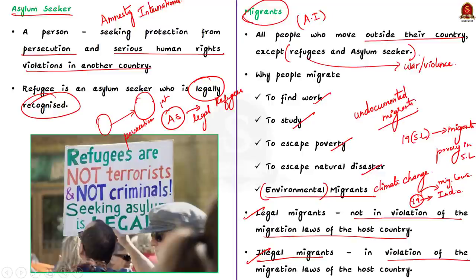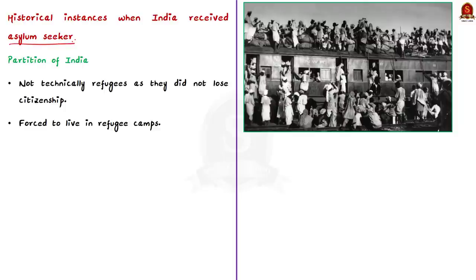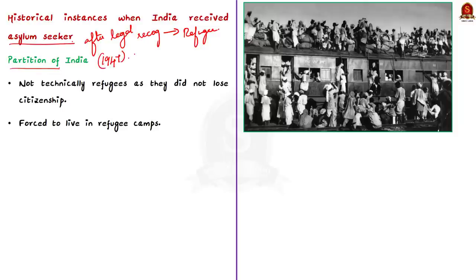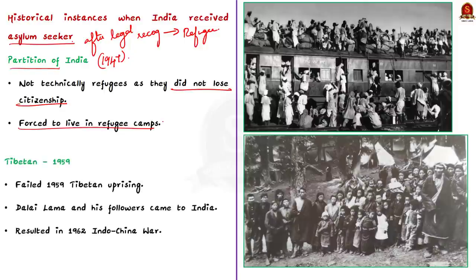Having understood the difference between refugees, asylum seekers and migrants, let us now see various instances when India received asylum seekers. I have deliberately used the word 'asylum seekers' instead of refugees because until they are given the refugee status by India, they cannot be called refugees. The first instance is when independent India received refugees during partition. Legally they cannot be called refugees because people who migrated from Pakistan to India during partition did not lose their citizenship; they continued to be Indian citizens. Colloquially they were called refugees because they were forced to live in refugee camps.